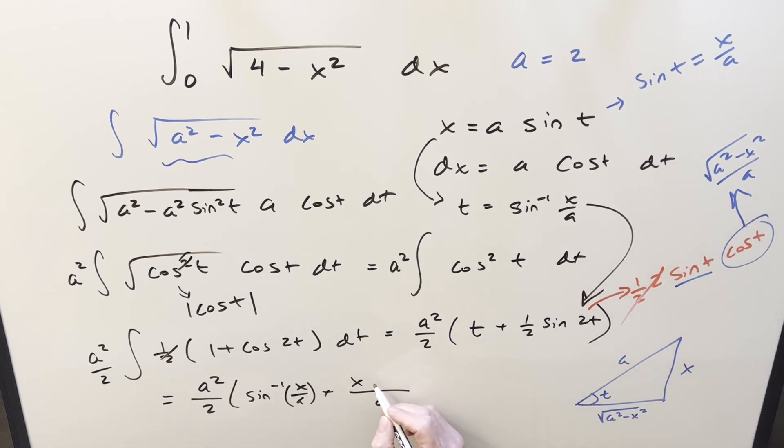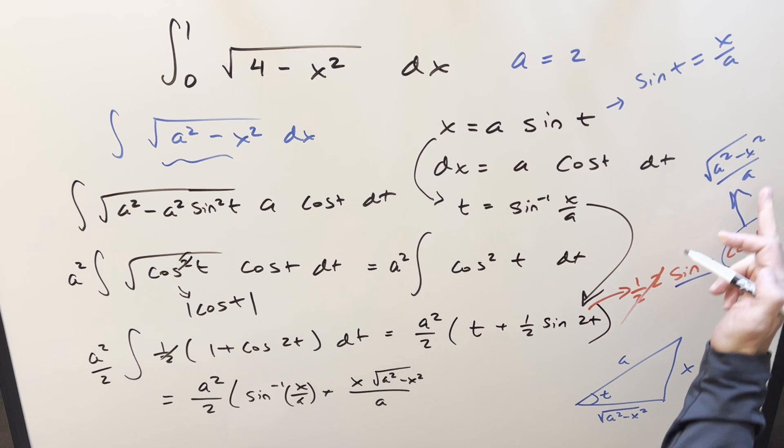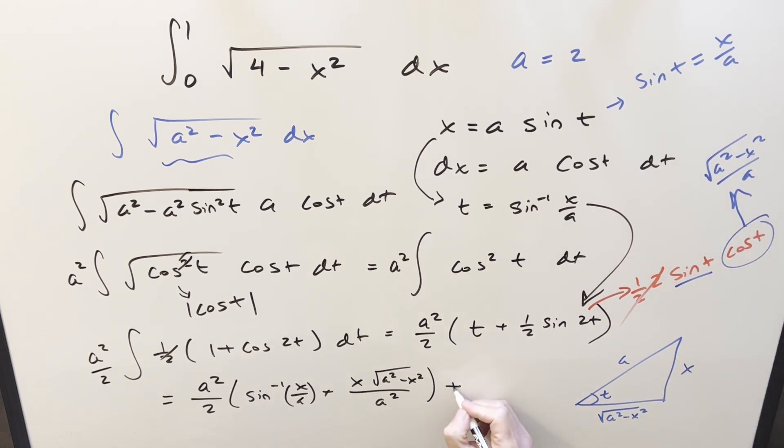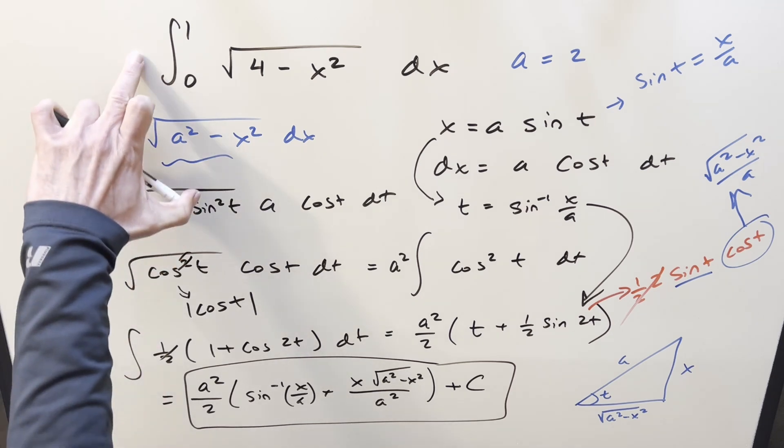plug in sine and cosine, so sine is going to be x over a, cosine is going to be this stuff, square root a squared minus x squared, multiplying in this a, we'll write this as a squared, add a plus c on here, and this is going to be our formula for the integral of a squared minus x squared. So now let me just clean up the board and we'll plug in and see if we can get a solution for this thing.